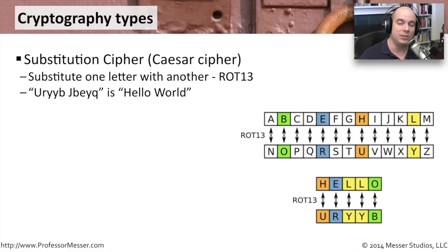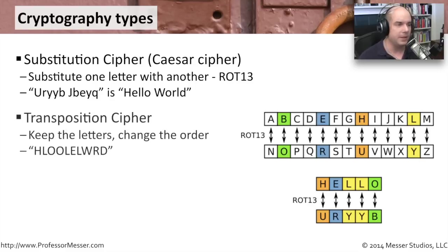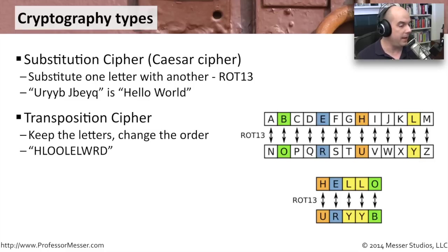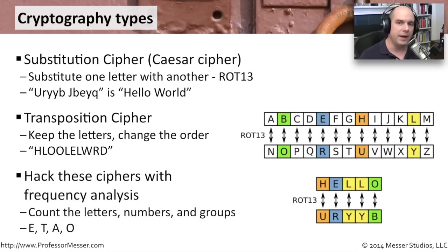This would turn a funny-looking message into 'hello world.' It's a very simple cipher — the message is encrypted and you can't read it unless you know exactly how many positions to rotate it. Another type of cipher is a transposition cipher, where we keep exactly the same letters but scramble them into a different format. You provide the person on the other end with a key indicating what letter should go in what position, and they transpose them back into the correct order.